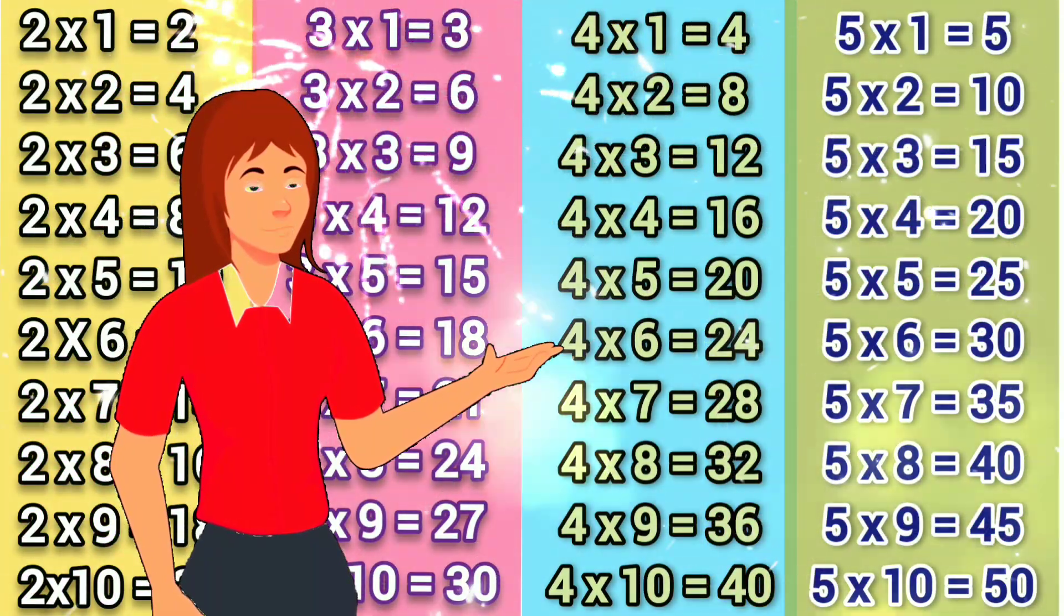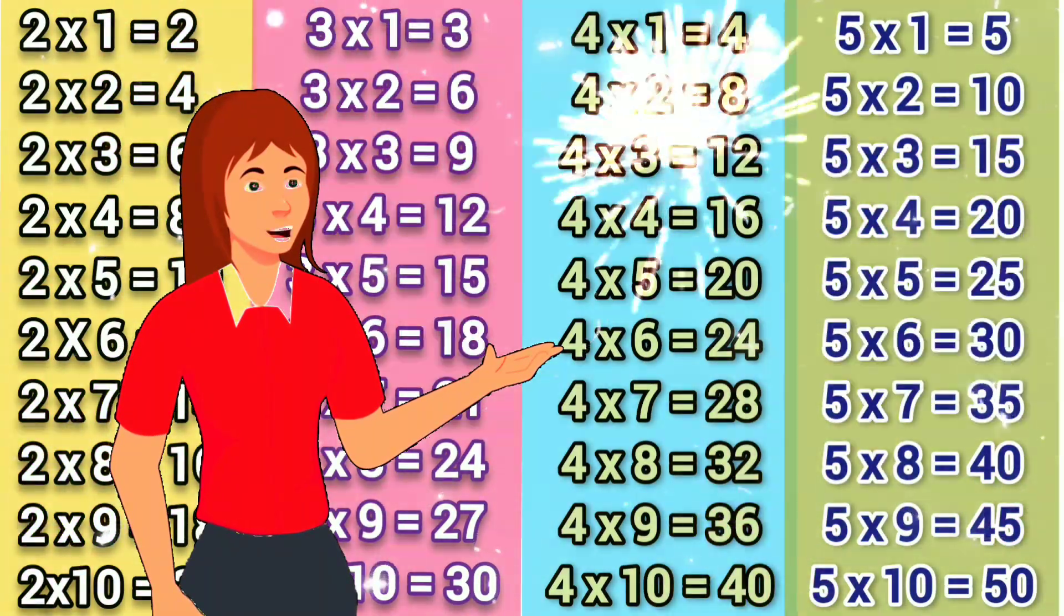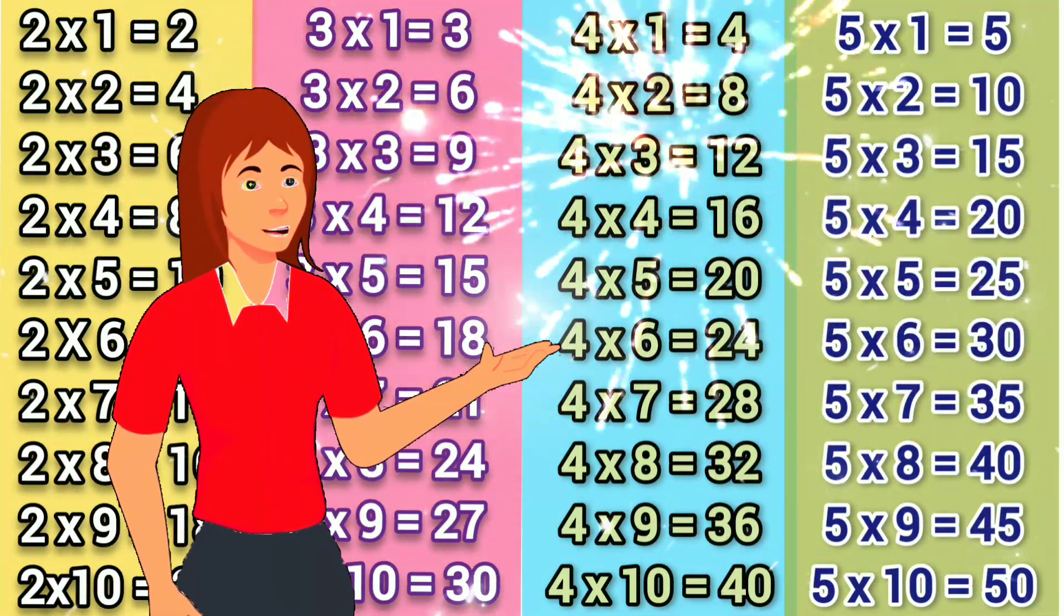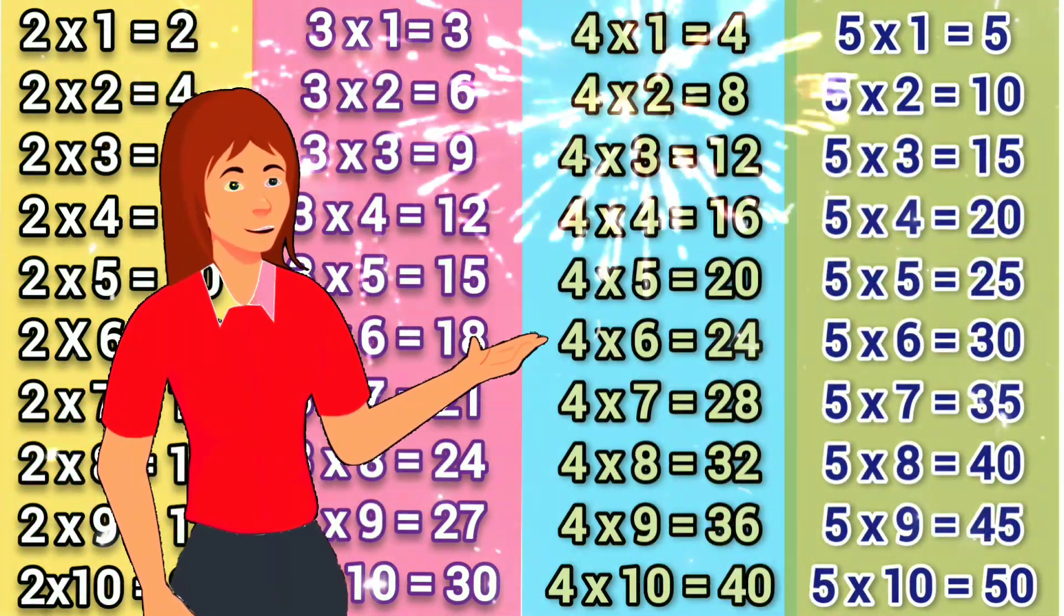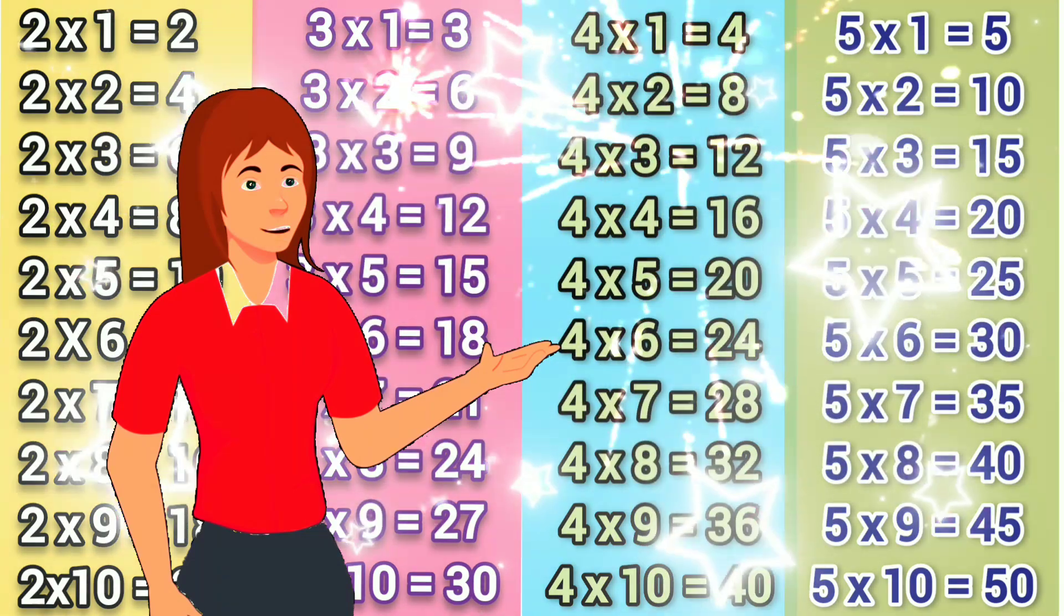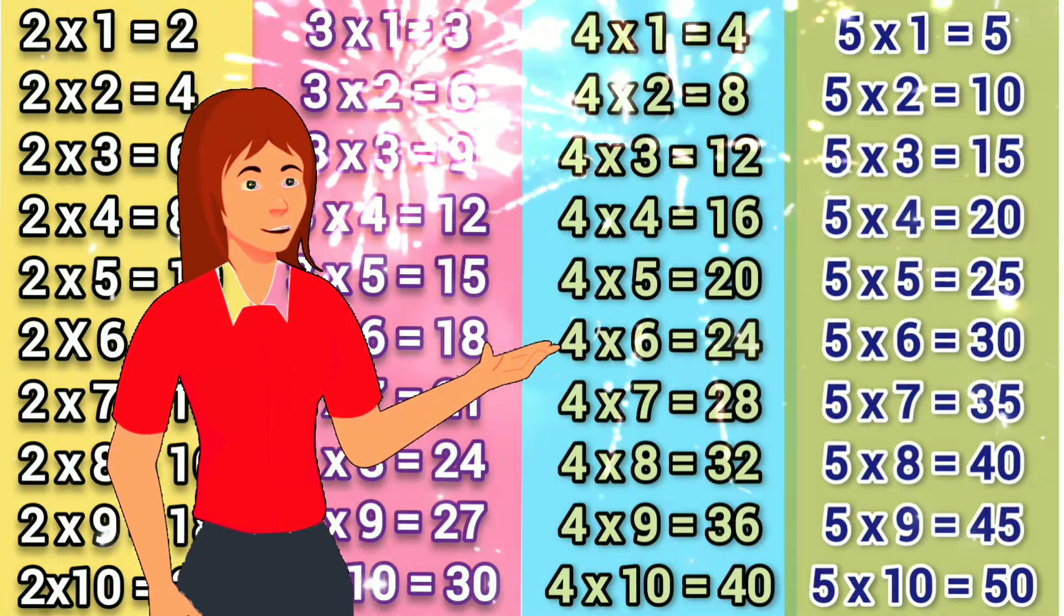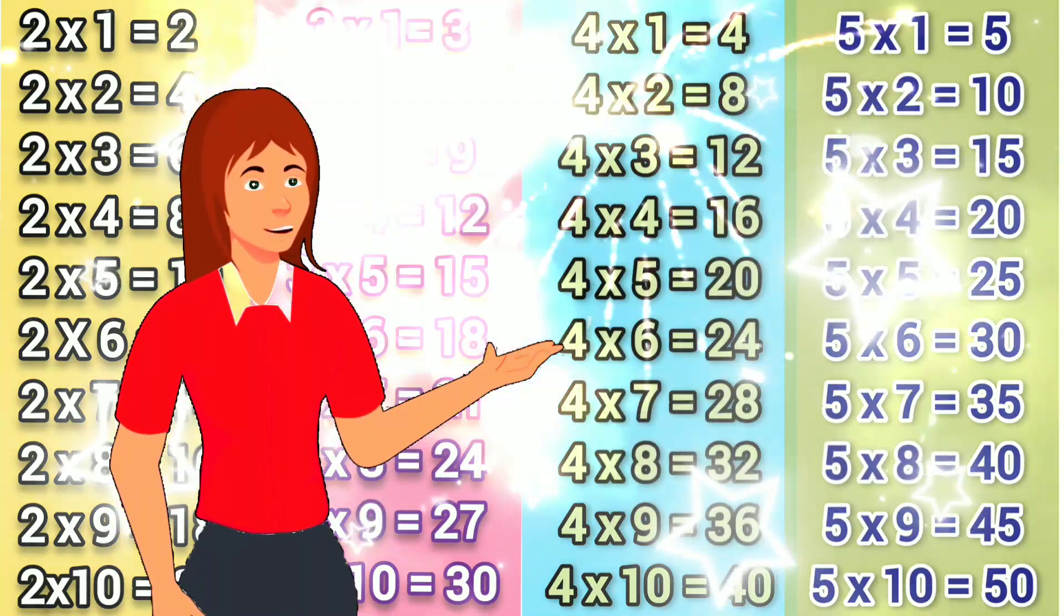5 1's are 5, 5 2's are 10, 5 3's are 15, 5 4's are 20, 5 5's are 25,